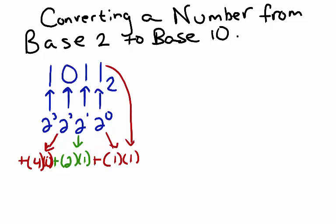Then, I'll take 2 to the third power, which is 8, and multiply that by 1. So now I have 8, plus 0, plus 2, plus 1.